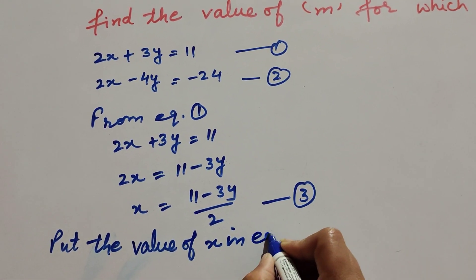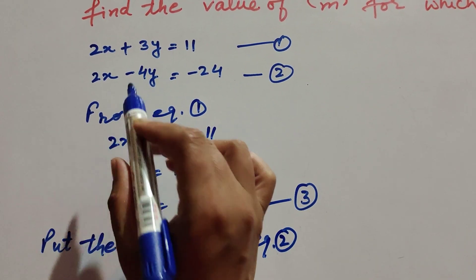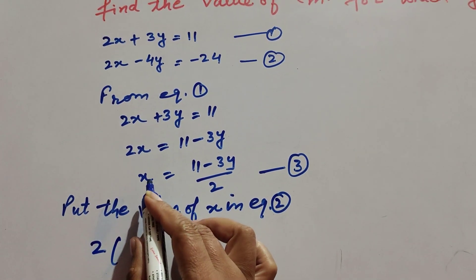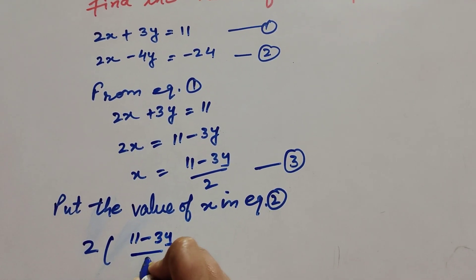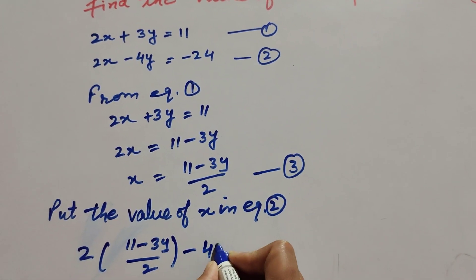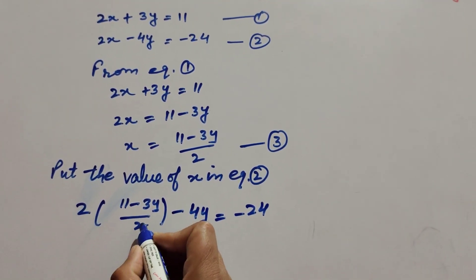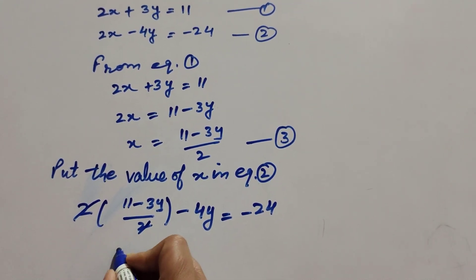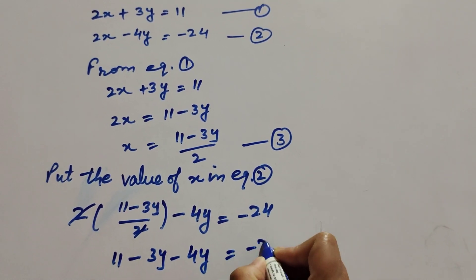Now we put the value of x in equation number two. Equation number two is 2x minus 4y equal to minus 24. Substituting x equal to 11 minus 3y over 2, the 2 in the denominator and numerator both cancel, so we get 11 minus 3y minus 4y equal to minus 24.